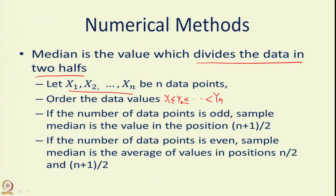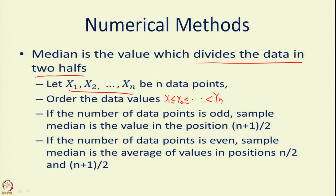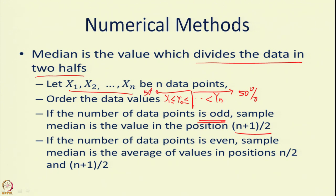Once you have ordered the data, if you have an odd number of data points — that is, if n is odd — you pick exactly the middle value: the (n+1)/2-th value. That value is called the median of the data. In other words, 50 percent of the data will be on one side and 50 percent on the other side. So this is called the median value.